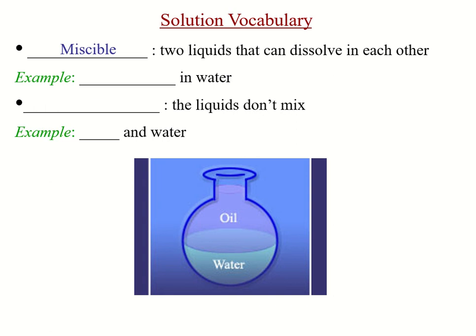Finally, know the terms miscible, where two liquids can dissolve in each other, and immiscible, where liquids do not dissolve in each other. Alcohol and water are very miscible — rubbing alcohol poured into water will dissolve. Immiscible would be oil and water, which do not dissolve in each other. Thank you, and have a good day.